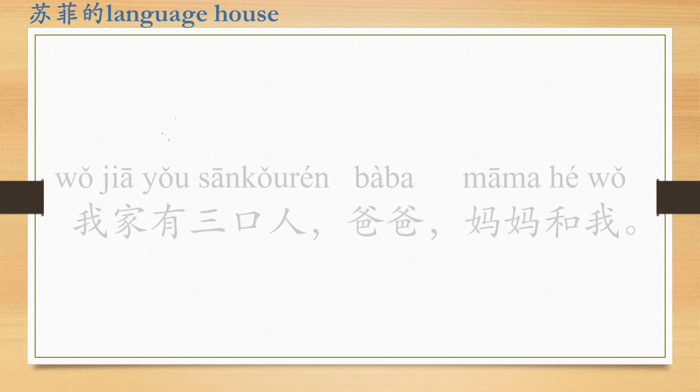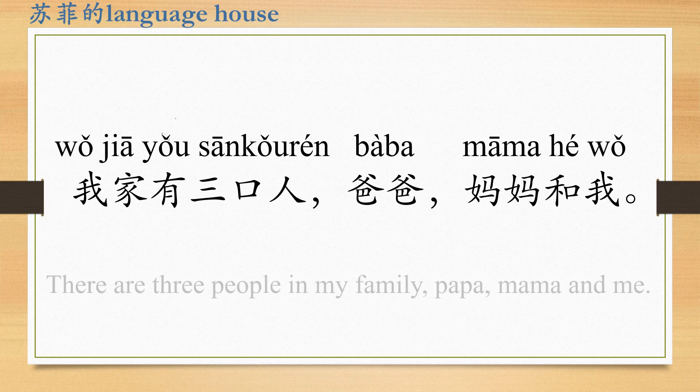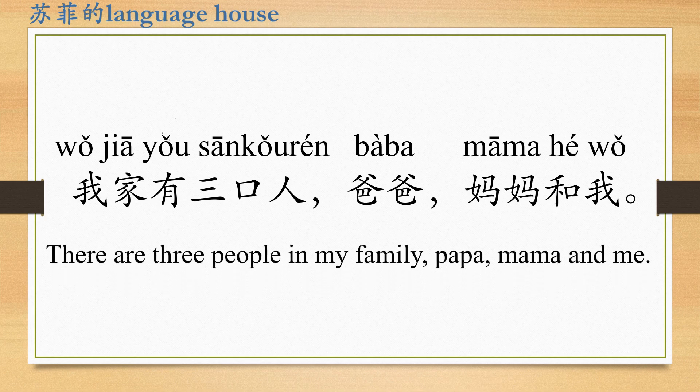Next, we use 爸 and 妈 to review what we have learned in previous videos. 我家有三口人 (Wǒ jiā yǒu sān kǒu rén). 家 means home or family. There are three people in my family: 爸爸，妈妈和我 (Bàba, māma hé wǒ). 和 means and. So this sentence means: There are three people in my family — dad, mom, and me.